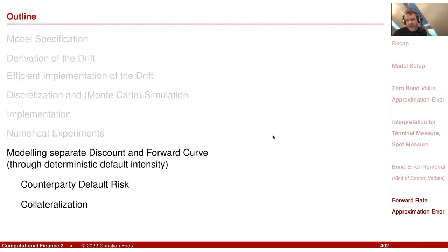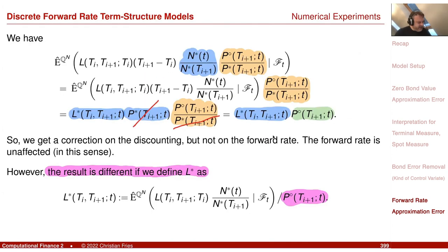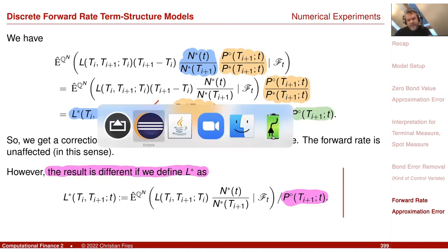We can use this trick to model a separate discount curve and forward rate curve for financial applications such as counterparty default risk or collateralization — it actually makes sense to use a different discount curve that not only corrects numerical error but also introduces a modeling aspect. We will discuss this in the next session. It is then a multi-curve model created with a very simple trick.